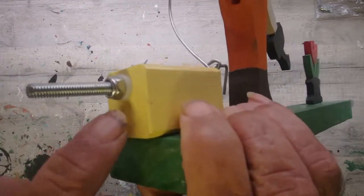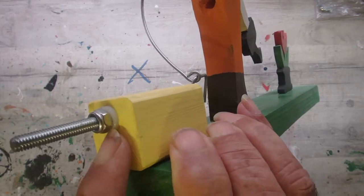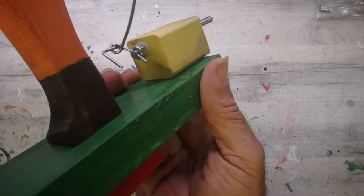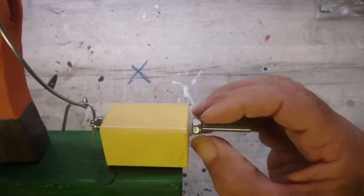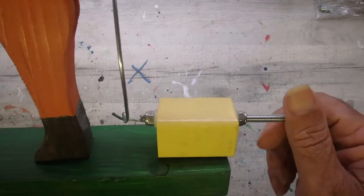We do put, as you can see, we do have bearings in here, little plastic nylon bearings. I'm not sure what they're made out of. There's one that side and one that side. We put shake proof nuts on.